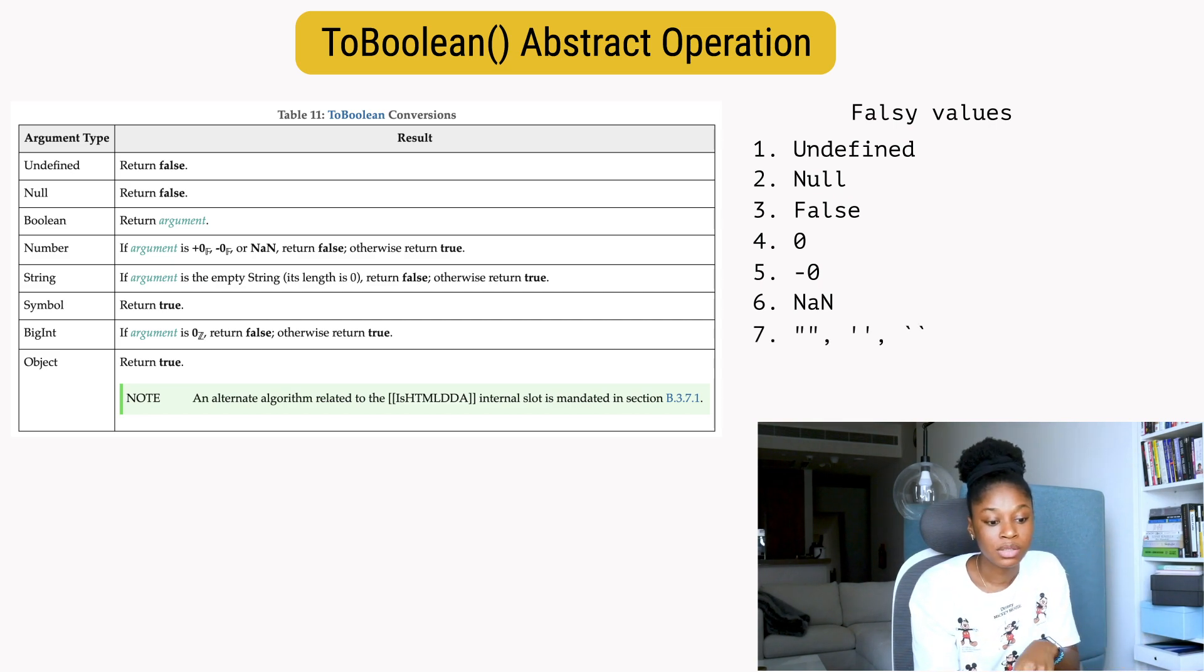For string, the only falsy value we have is the empty string. Symbol is considered truthy, so that's not on the falsy list. For BigInt, the only falsy value we have is zero n. For objects, it says return true.